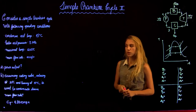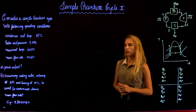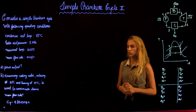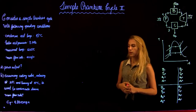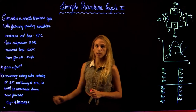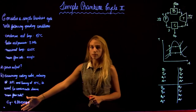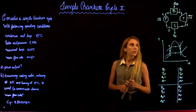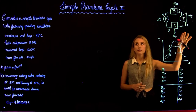We are first asked to calculate the power output, and then we are told to assume cooling water entering at 10 degrees Celsius and leaving at 17 degrees Celsius, which is used to condensate the steam in the condenser. Knowing this, we are asked to calculate the mass flow rate. We are also given the CP of cooling water. Here we can see that we already have our simple Rankine cycle.